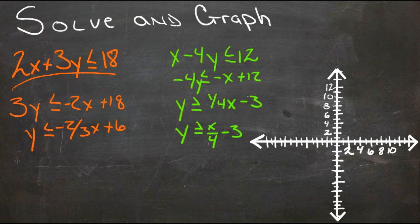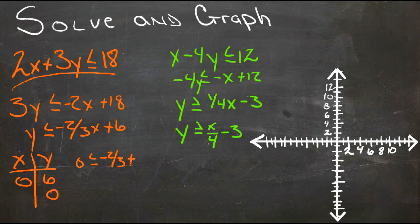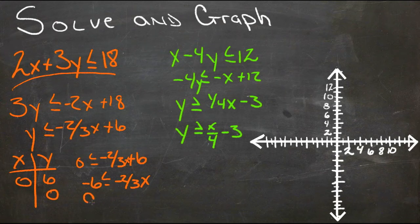Graphing the first line using intercepts: when x = 0, y = 6. When y = 0, we solve 0 = -2/3x + 6, subtract 6 and get -6 = -2/3x, then multiply by -3/2 to get x = 9. So the intercepts are (0, 6) and (9, 0).